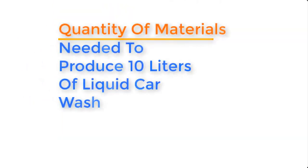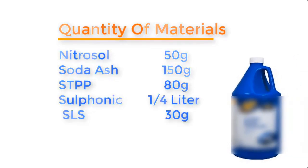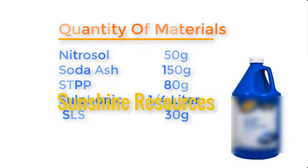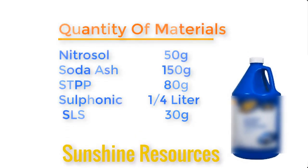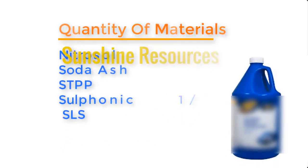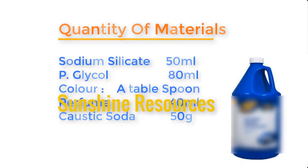Now let's establish the quantity of materials needed to produce 10 liters of liquid car wash. Nitrosol 50g, soda ash 150g, SDPP 80g, sulfonic acid one quarter liter, SLS 30g, sodium silicate 50ml.